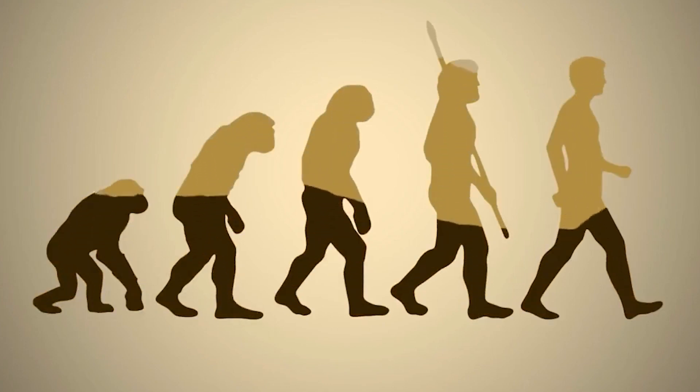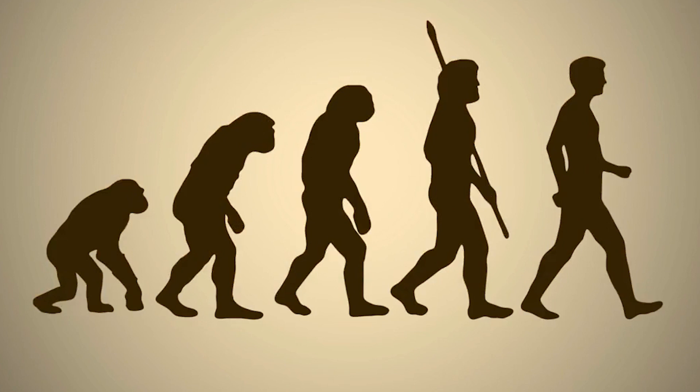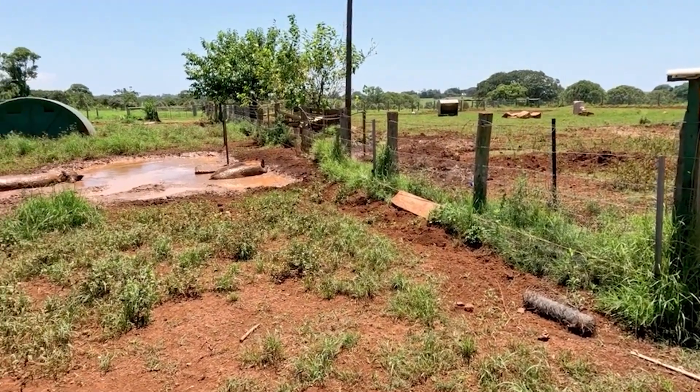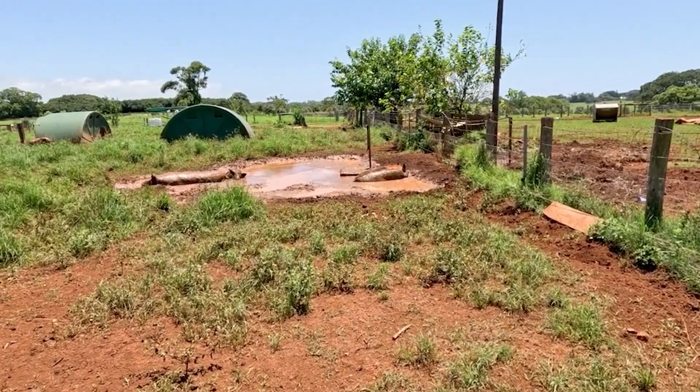Well, some scientists are basically genetic detectives, tracking down clues about how we evolved over millennia. One such revealing study followed how the expansion of agriculture changed not only the landscape, but our very genetic code.